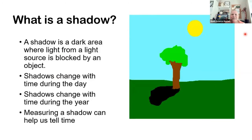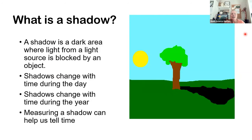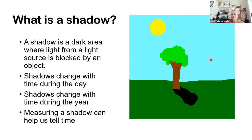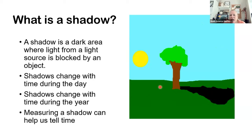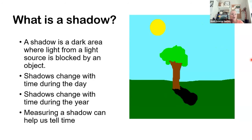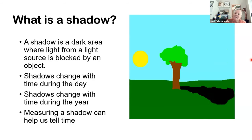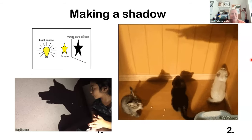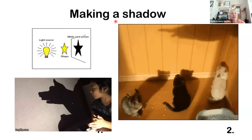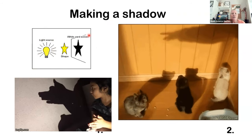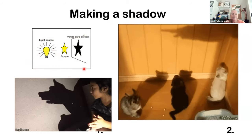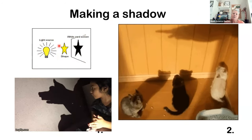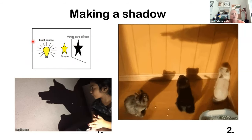A shadow is a dark area where the light from a light source is blocked. Here we've got our sun, and when the tree blocks the sun it creates a shadow down here. The shadow is always opposite the sun, so our shadow is going to change with different times of day and also with different seasons — that's what your long-term experiment is all about. To make a shadow you have to have a light source, a light screen, and the shape goes between them.